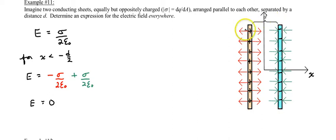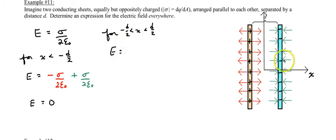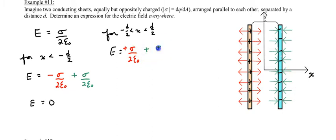Now let's look at the region in between the two plates, where x is between negative d over 2 and positive d over 2. You'll see that the electric fields are both in the same direction. We have positive sigma over 2 epsilon naught from the left plate, and from the right plate we also have positive sigma over 2 epsilon naught. So both of these are in the same direction and they add. The net effect is that the electric field in between the two plates is sigma divided by epsilon naught.